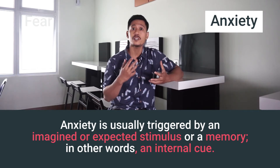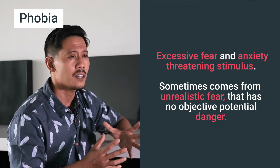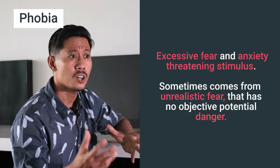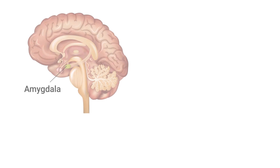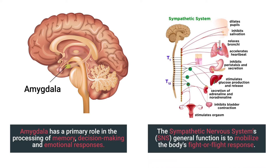Something from our memory is going to make people anxious. Too much fear is going to cause phobia, and phobia is sometimes an unrealistic fear — you are afraid of something that has no objective potential danger. That's the difference between fear, phobia, and anxiety. The amygdala, which is an area of the brain, along with the sympathetic nervous system, is responsible for fear.